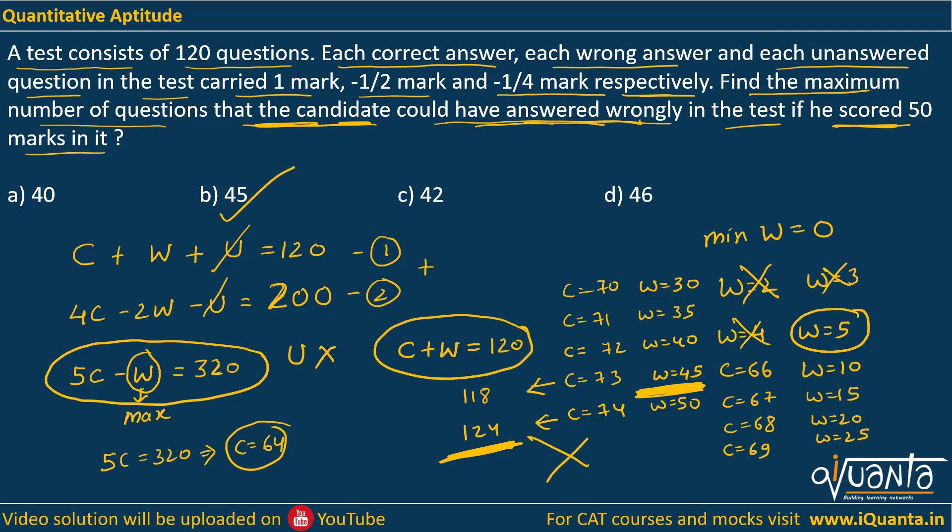So the maximum number of wrong questions is 45. Option B is the correct answer. There were multiple conditions involved — if there is any doubt, please comment.